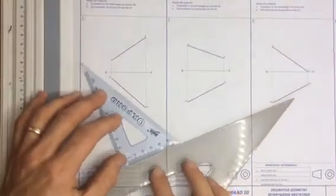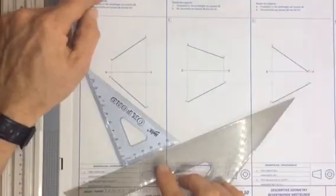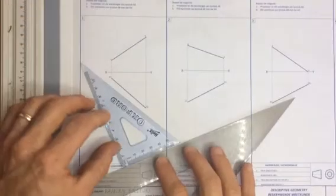Finding the true length of this line segment AB so as to find the true inclination of the line segment to the horizontal plane.